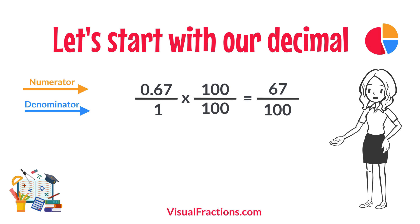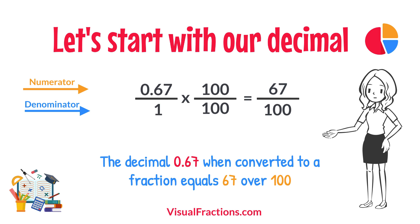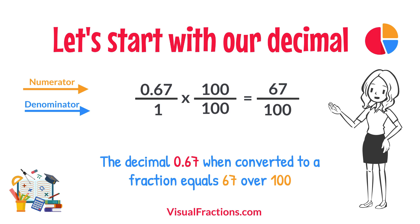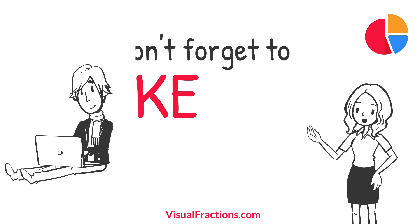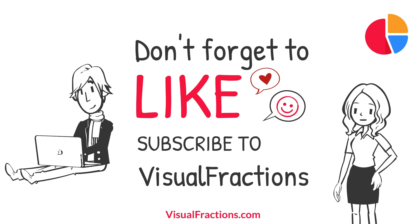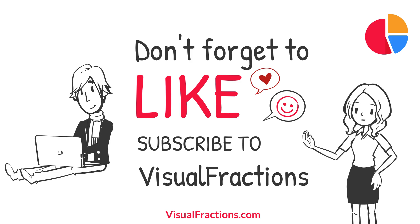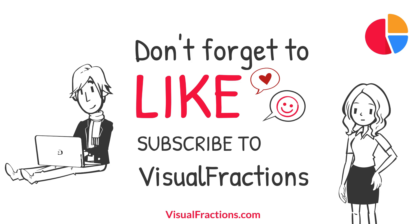And there you have it. The decimal 0.67 when converted to a fraction equals 67 one-hundredths. This fraction is in its simplest form and cannot be further simplified. If you found this tutorial helpful, remember to smash that like button and subscribe to Visual Fractions for more practical math insights. Thanks for watching.